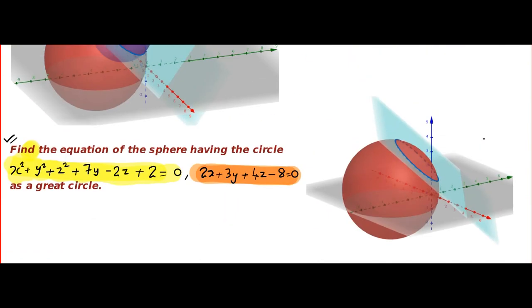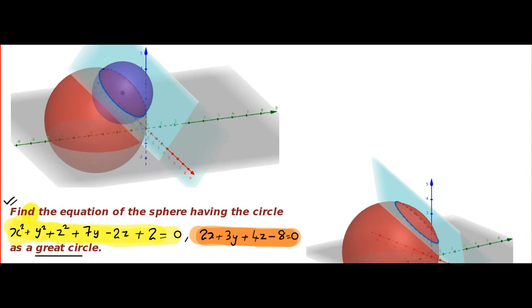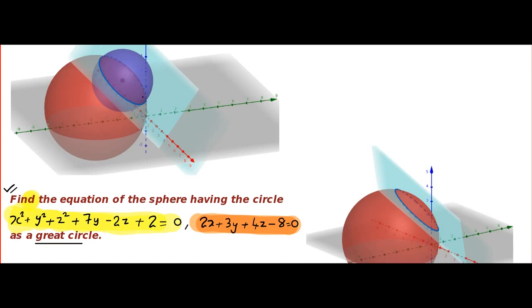Now, coming to the question, they want this circle to become the great circle. Look at this. Even though there are many spheres, in only one sphere, this circle will act as the great circle. And that happens when the plane will contain the center of the newly formed sphere. So, the problems are very easy to work out. Purple sphere is the great sphere. And what is the specialty? The center of the purple sphere will be on the plane.